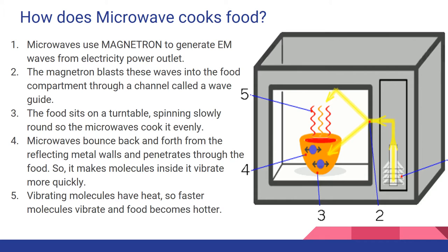The waves get reflected from the reflecting metal walls and penetrate through the food and vibrate the atoms in the food. The molecular friction generates heat and the food gets hotter and cooked.